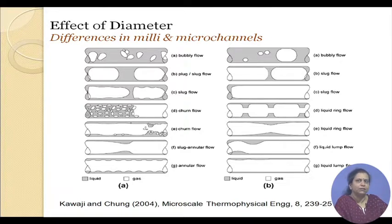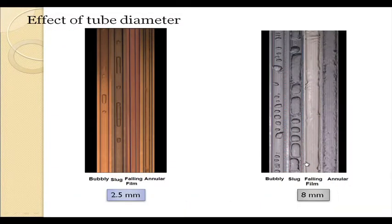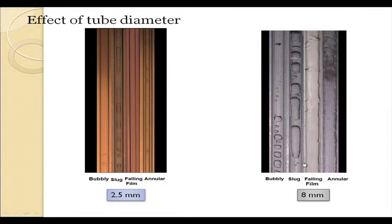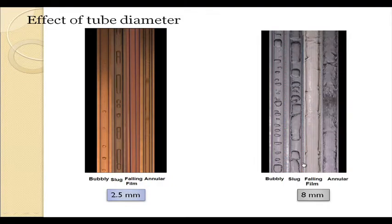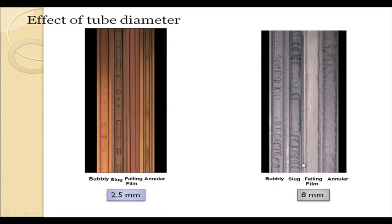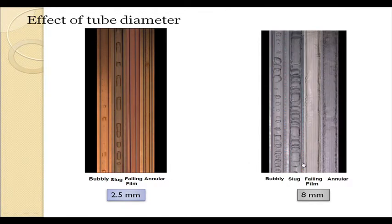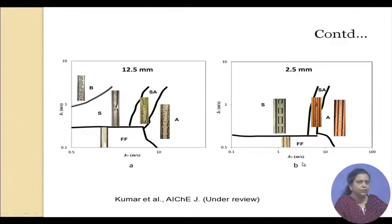As far as the effect of diameter is concerned, we have already had a lot of discussions regarding it, so I will not be going into the details anymore. I have also discussed that in the mesoscale the diameter effect is most significant, and this slide shows the shape of the bubbles, the difference in the nature of bubbly flow, slug flow, the smoothness of the falling film in 2.5 millimeters as compared to the wavy film in 8 millimeters. The enlarged range of slug flow with miniaturization has also been discussed.